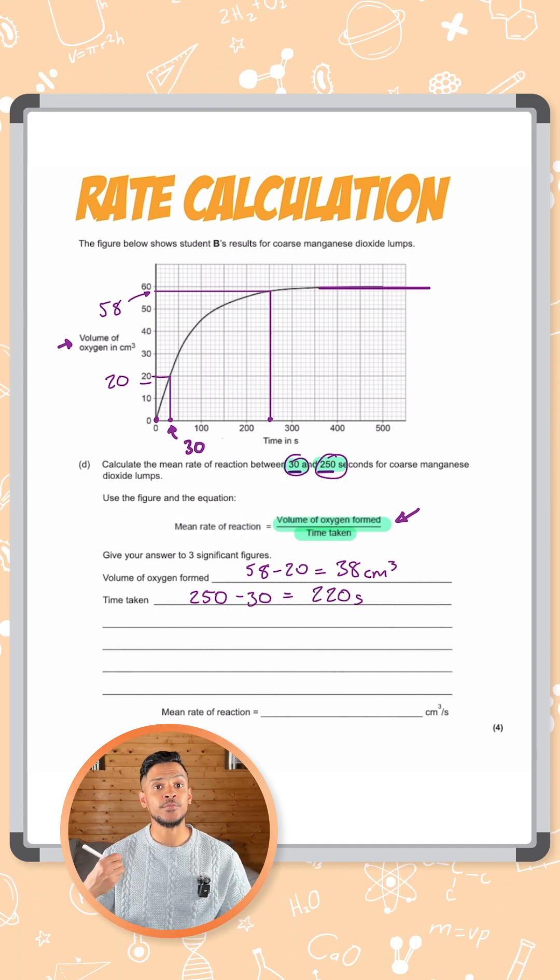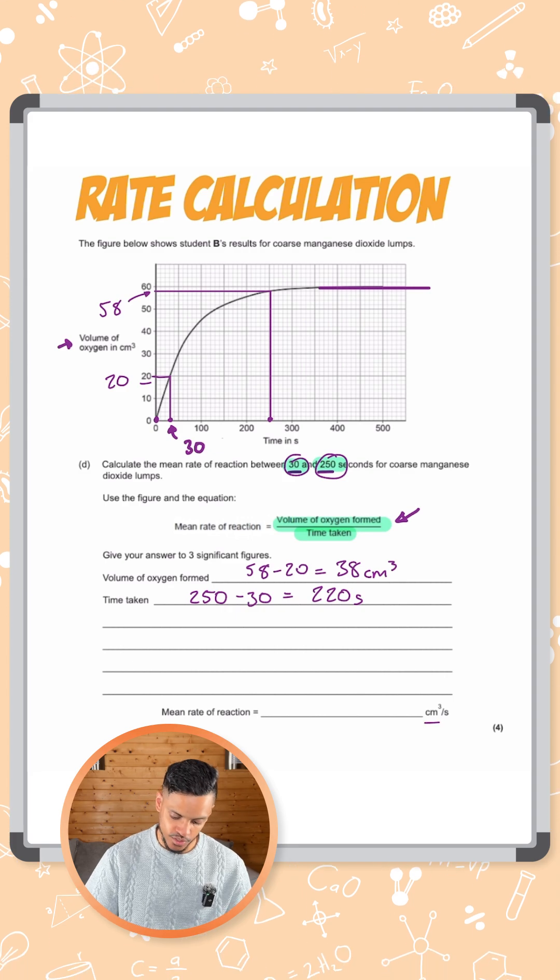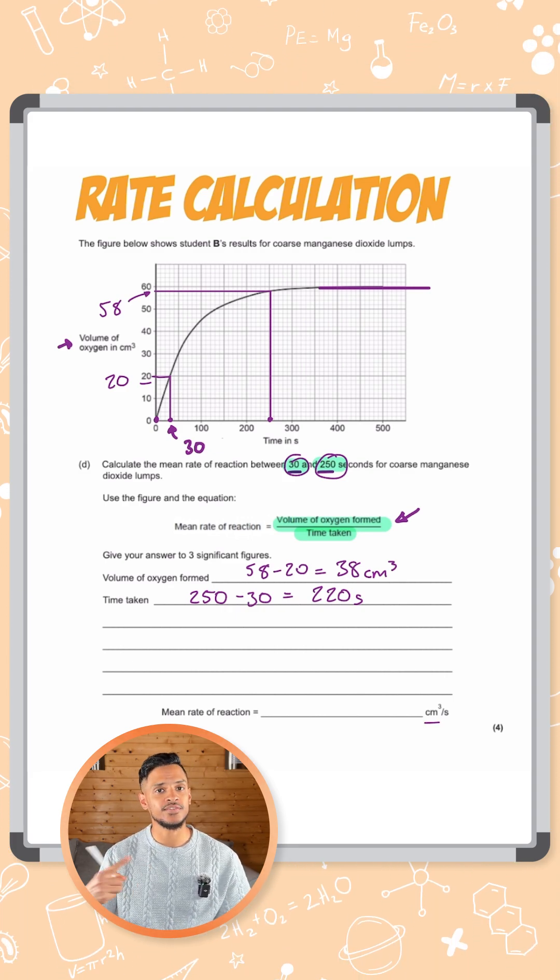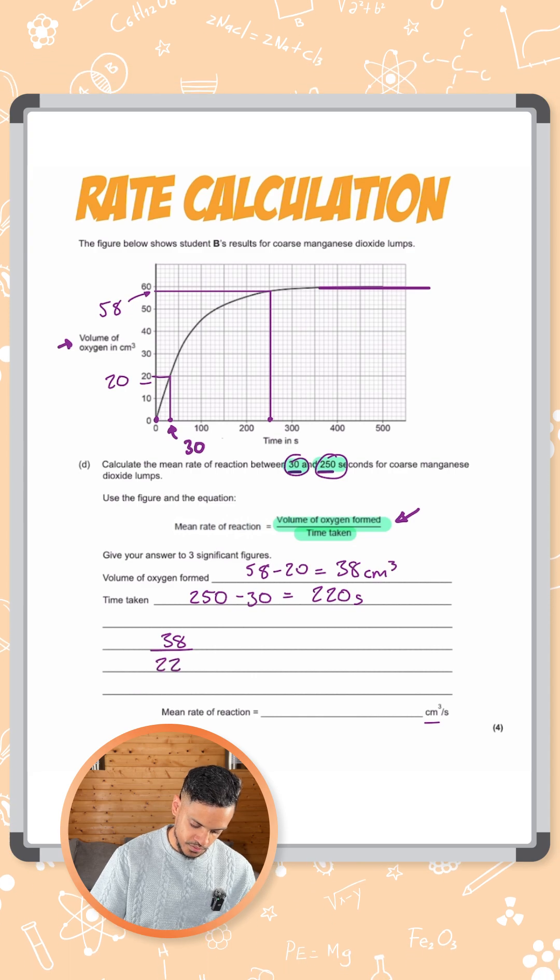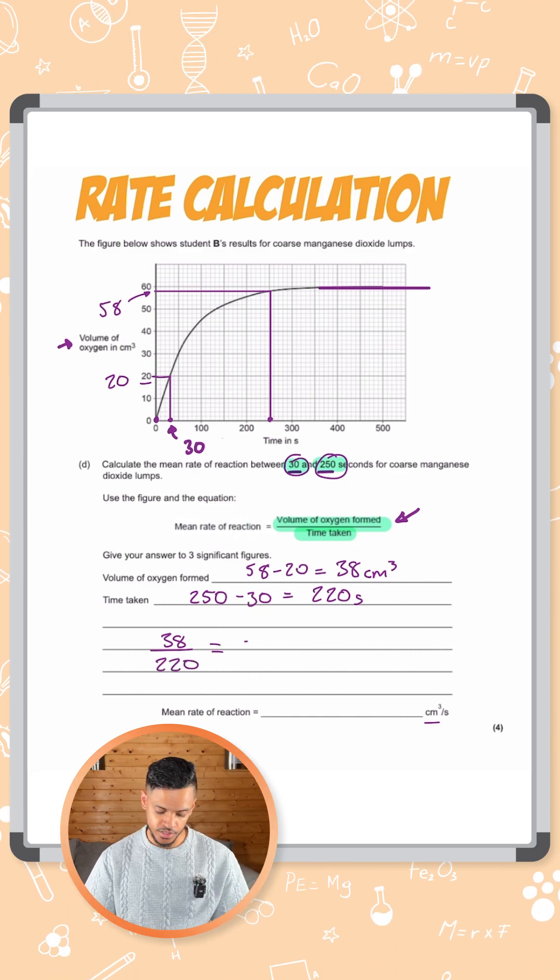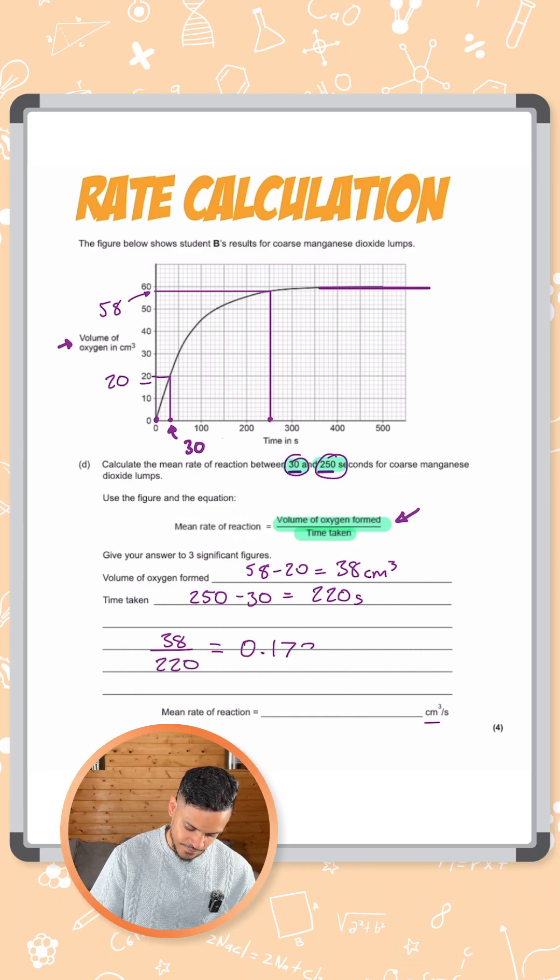We want to find out now the rate in centimeters cubed per second. So you just need to divide those two numbers now. So 38 divided by 220. When you put that in your calculator you should get 0.1727.